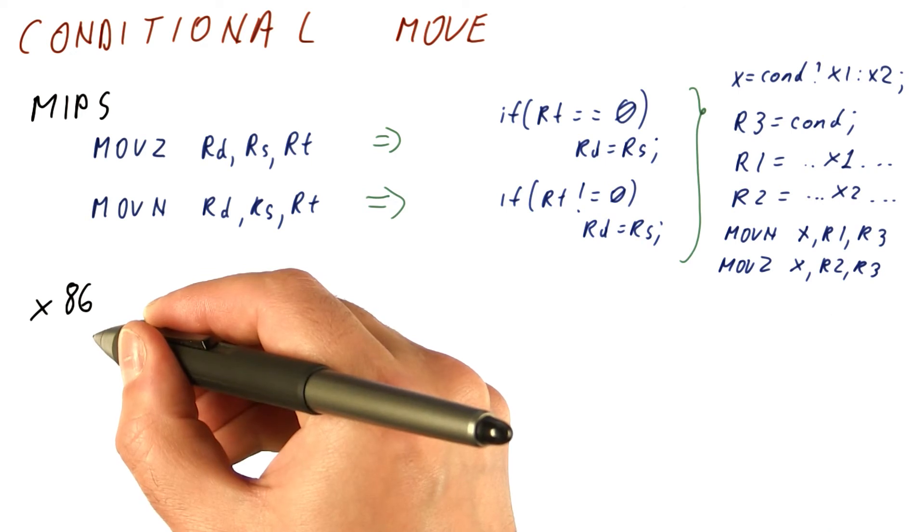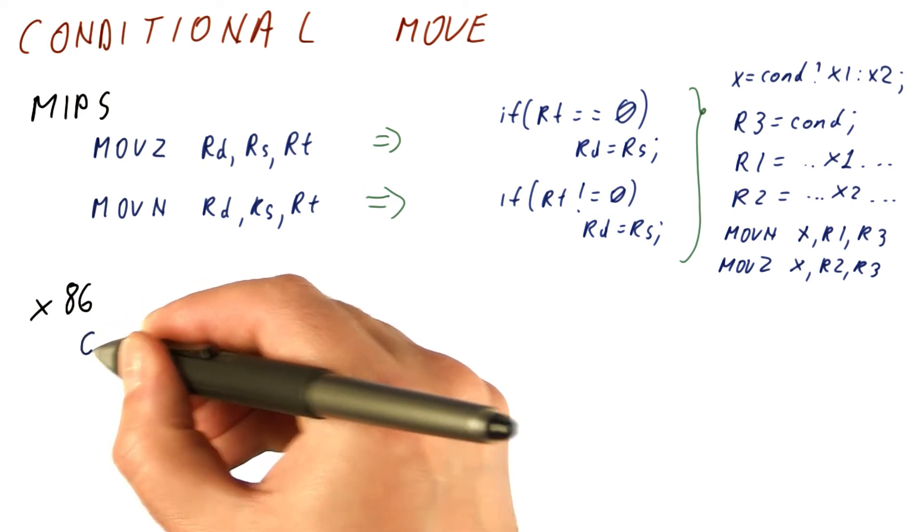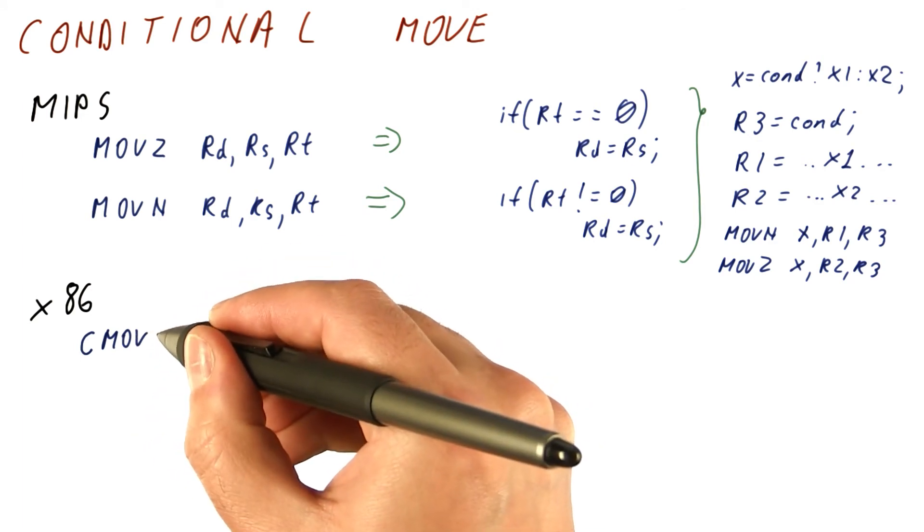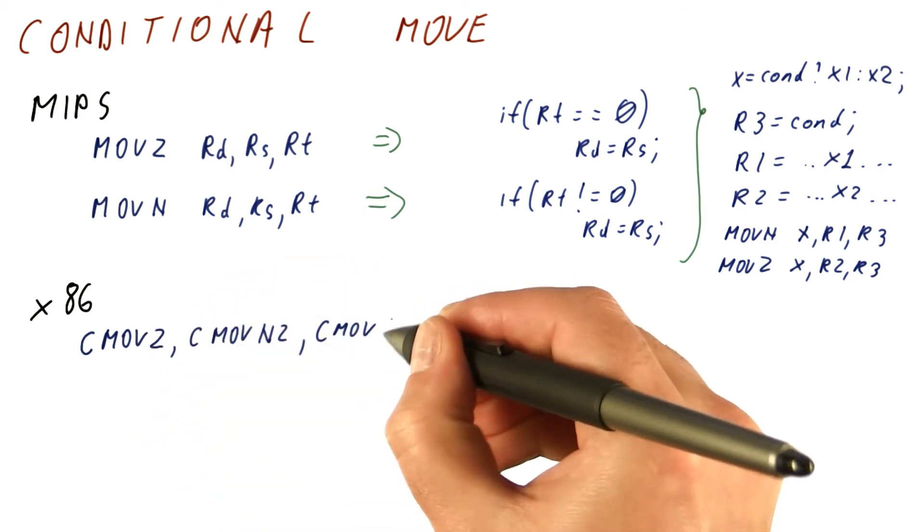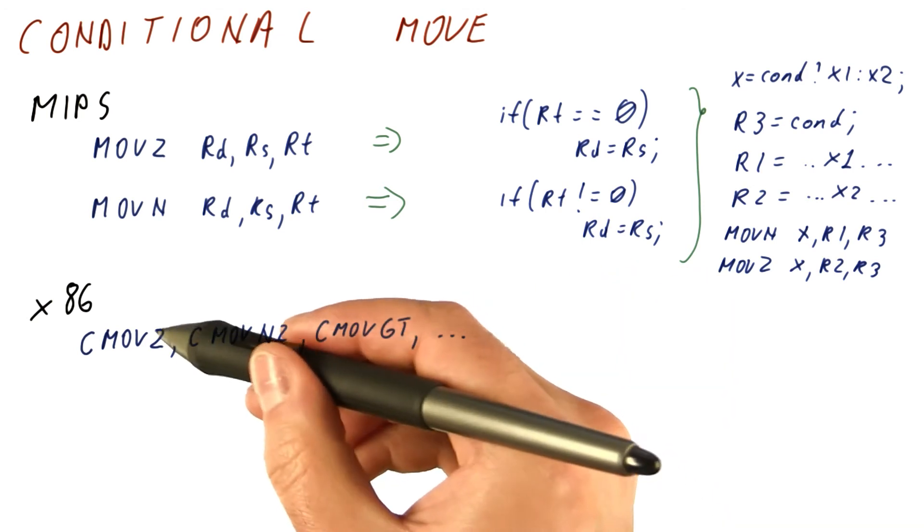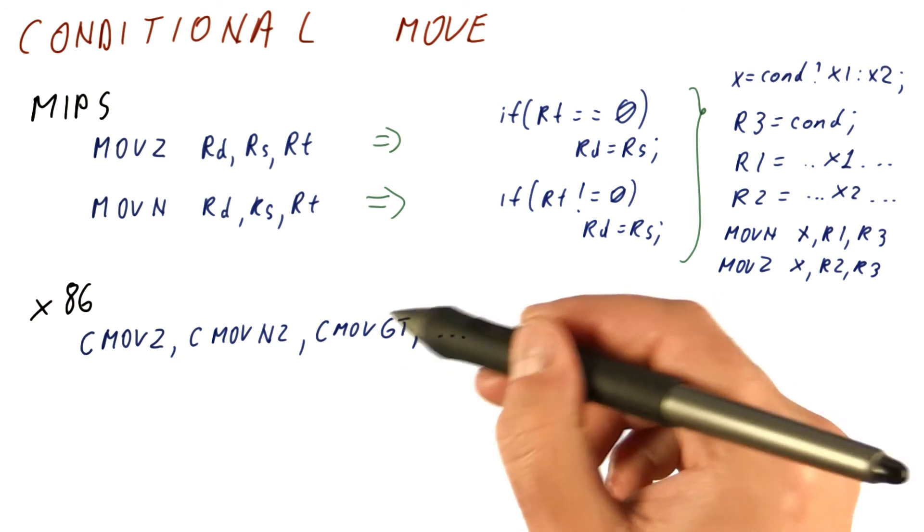The x86 instruction set has a whole set of so-called CMOVE instructions. So for example, it has CMOVE Z, CMOVE NZ, CMOVE greater than, et cetera. Where the condition here is determined by the flags.